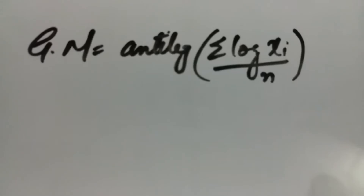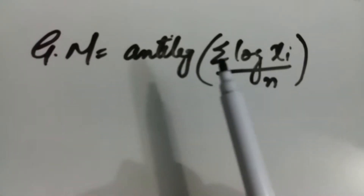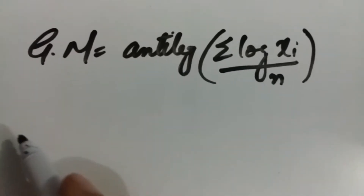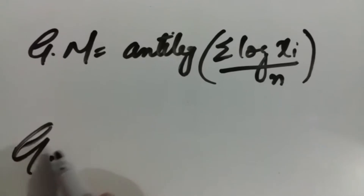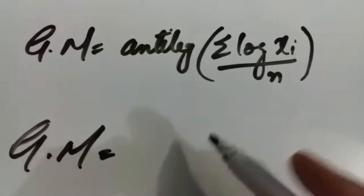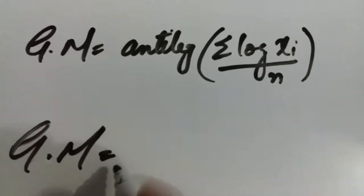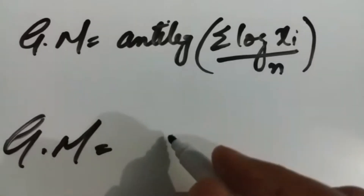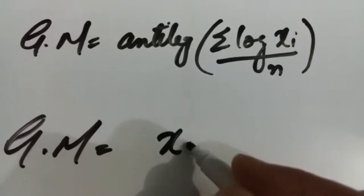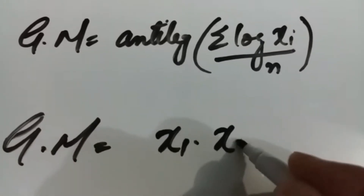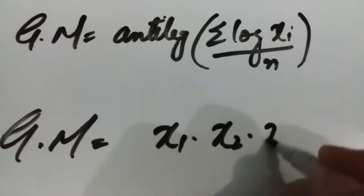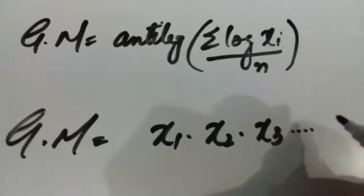Today I will explain how to derive the formula for geometric mean. The definition of geometric mean is that it is the nth root of the product of n observations: x₁ multiplied by x₂ multiplied by x₃ up to xₙ, raised to the power 1 over n.